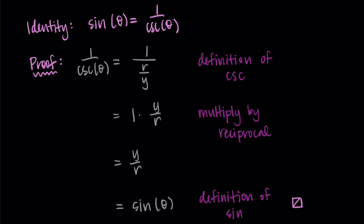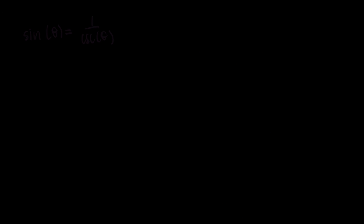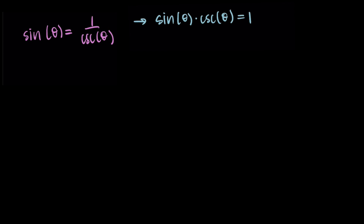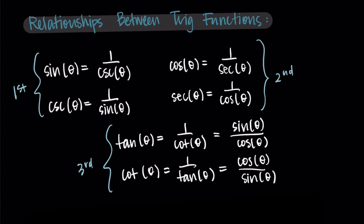This is just how we usually notate things when we do proofs in later math classes. Now we can use this identity to find the similar one. I'll multiply the cosecant over, so I have sine times cosecant equals one. Then I'll divide by sine, giving cosecant of theta equals one over sine of theta. And there we go — those are our first two identities, showing how sine and cosecant are related.